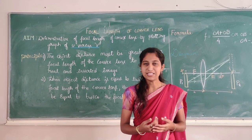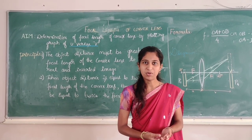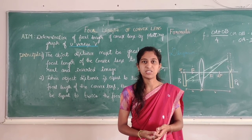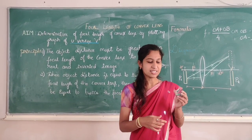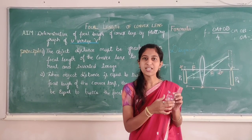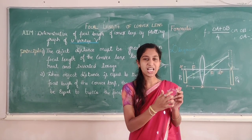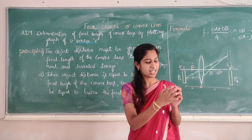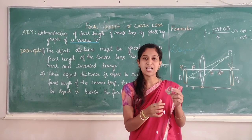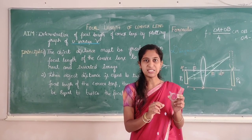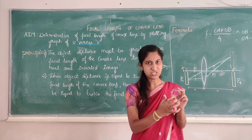We will define lens. A lens is a refractive medium bounded by two surfaces. As we can see, this is the convex lens. A convex lens is a converging lens which is thicker at the middle and thinner at the edges.